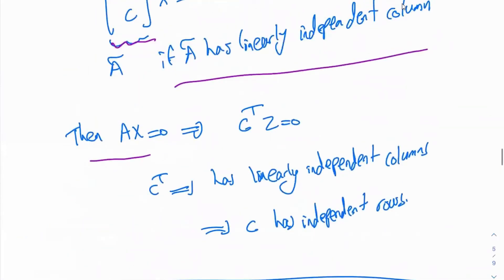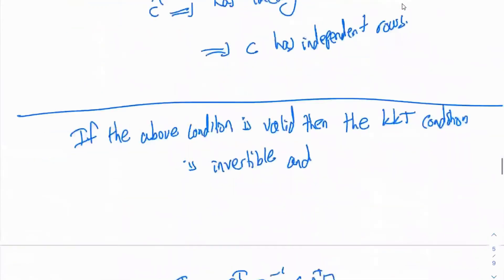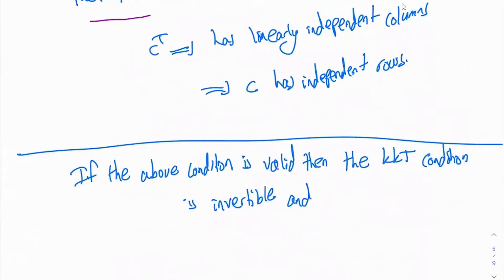C should have linearly independent rows — so C should be either wide or square. That's how you see this proof intuitively. So any time you are in doubt, just go ahead and write the KKT matrix times the vector equal to 0, and prove that the zero vector is the only solution. Then determine what conditions are required on matrices A and C.